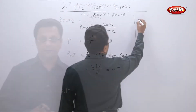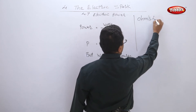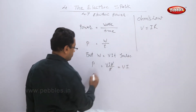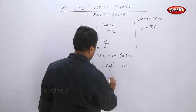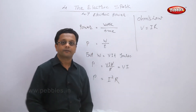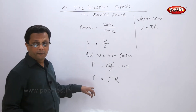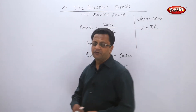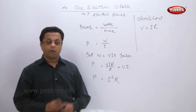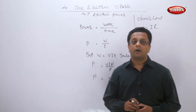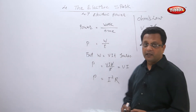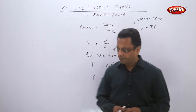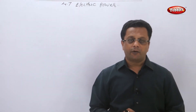Using Ohm's law, V equals I·R. Substituting this into P = V·I, we get P equals I squared times R. So the final formulas are: P = V·I, or P = I²R. Whatever data is given, substitute into the appropriate formula — if voltage and current are given use V·I; if resistance and current are given use I²R.